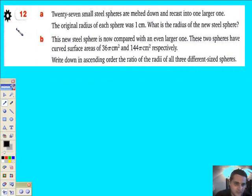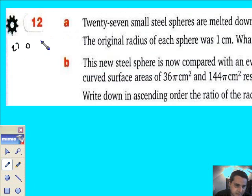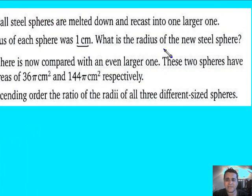So we've got a little one, and I've got 27 of these, and I'm going to put them all together and get one big one. The original radius of the little one is one centimetre. What is the radius of the new steel sphere? In other words, the big one.